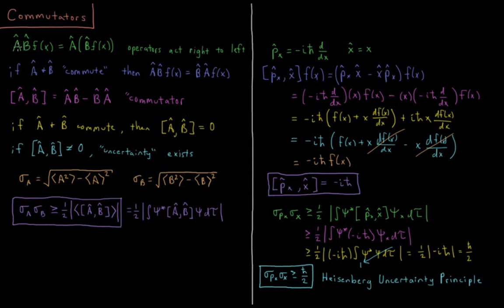So if we have two operators, A and B, and they're both acting on this function f of x, this is equal to the following. So operators act from right to left. So if we have A, B, F,